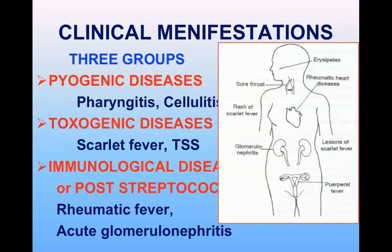The clinical manifestations of Group A streptococci are divided into three groups: pyrogenic or inflammatory diseases produced locally where the organism multiplies; toxigenic diseases like scarlet fever or toxic shock syndrome, where the toxin is produced at the site and carried into the bloodstream; and immunological or post-streptococcal diseases.